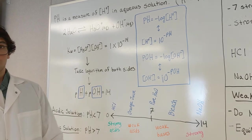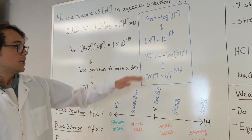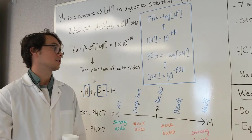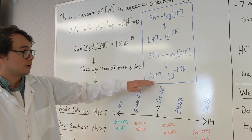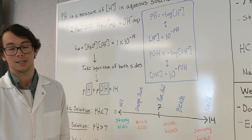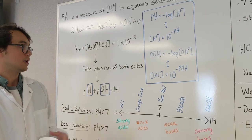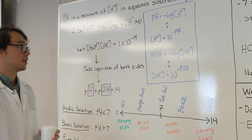And, of course, this works with OH as well. So, we got pOH equals negative log of OH concentration. If you want to find your OH concentration, you just do 10 to the negative pOH. Same deal, just with hydroxide instead of H-plus.